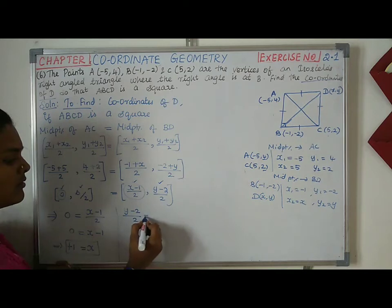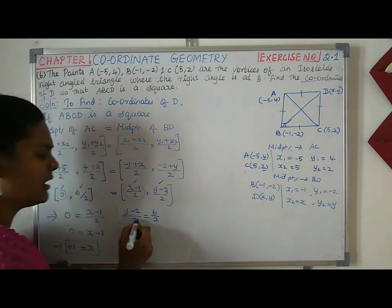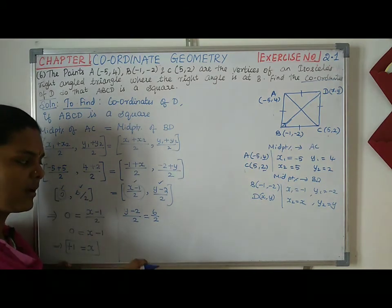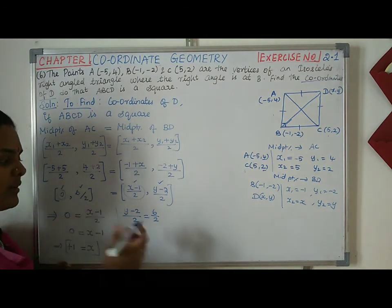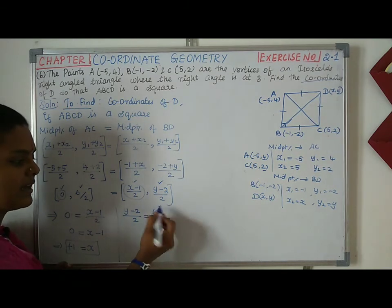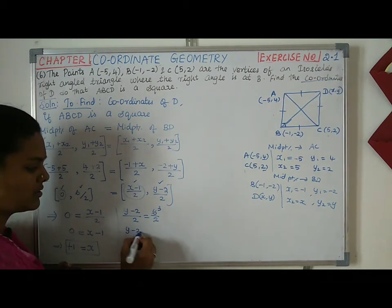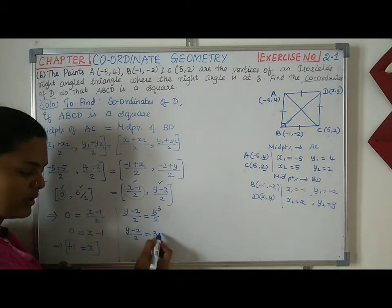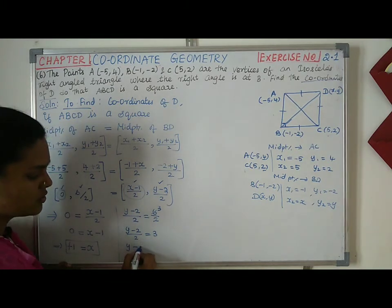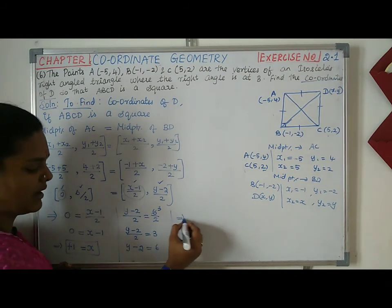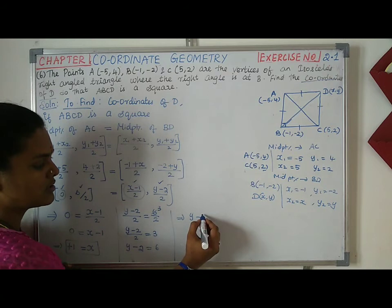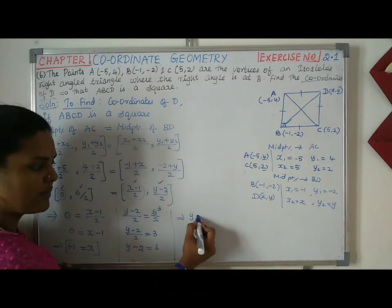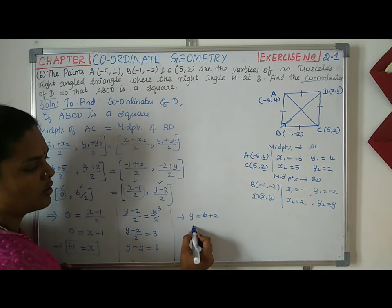Divide by 2 divided by 2, equal to 6 divided by 2. The 2s cancel. So 6 plus 2, y value is 8.